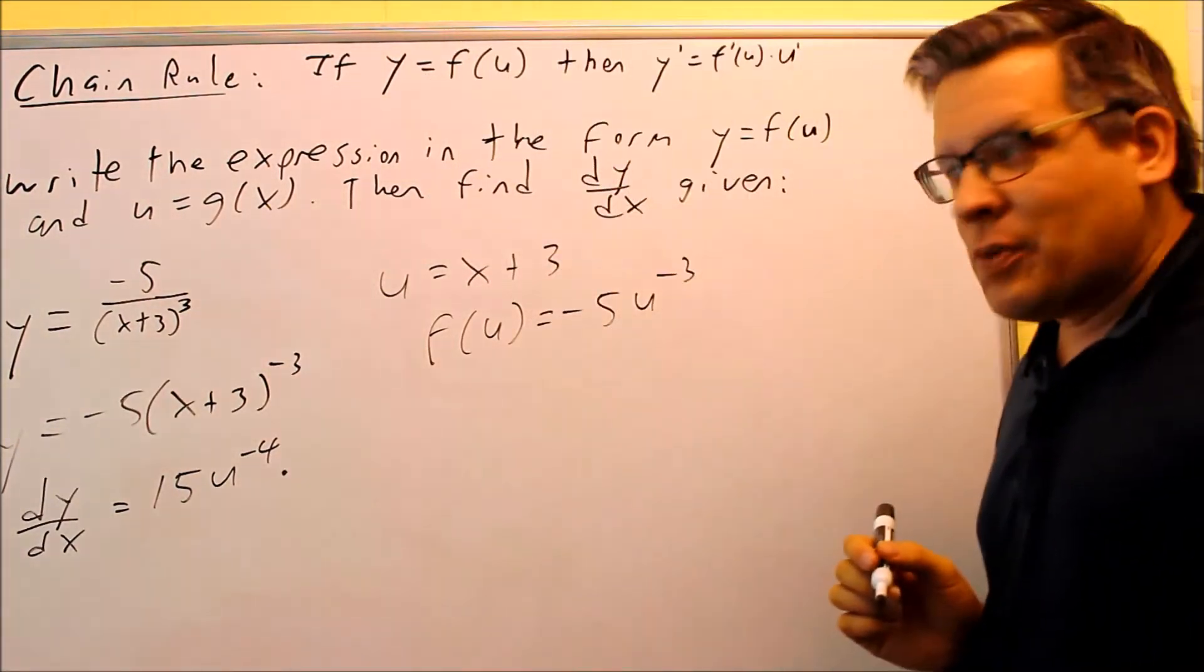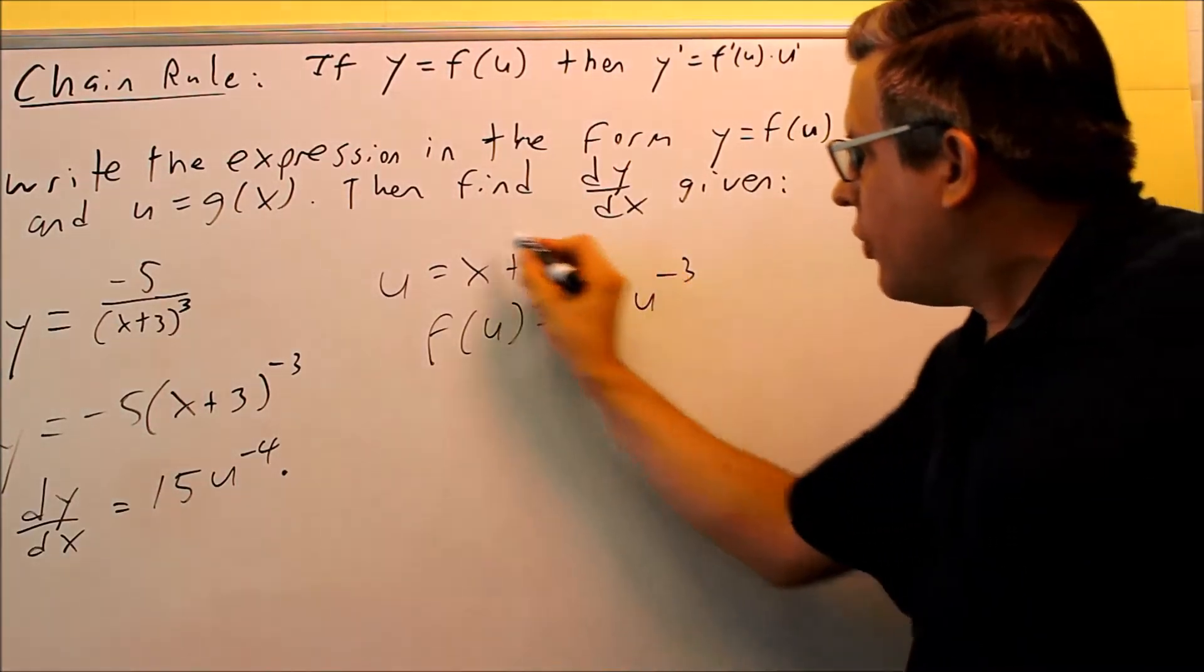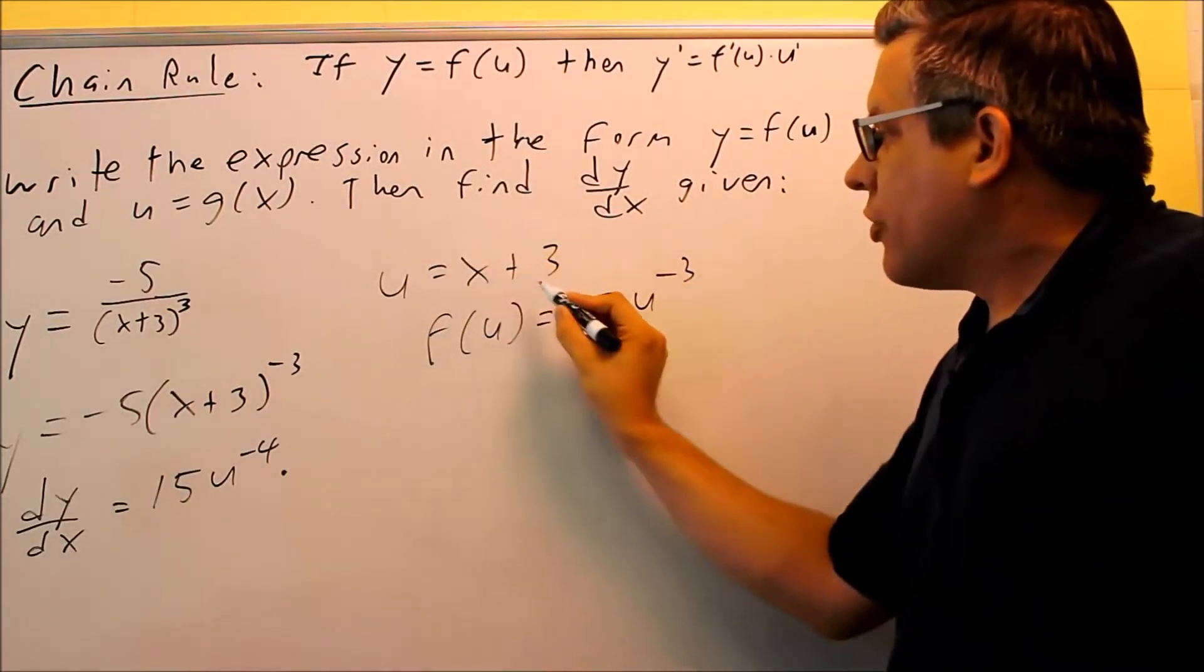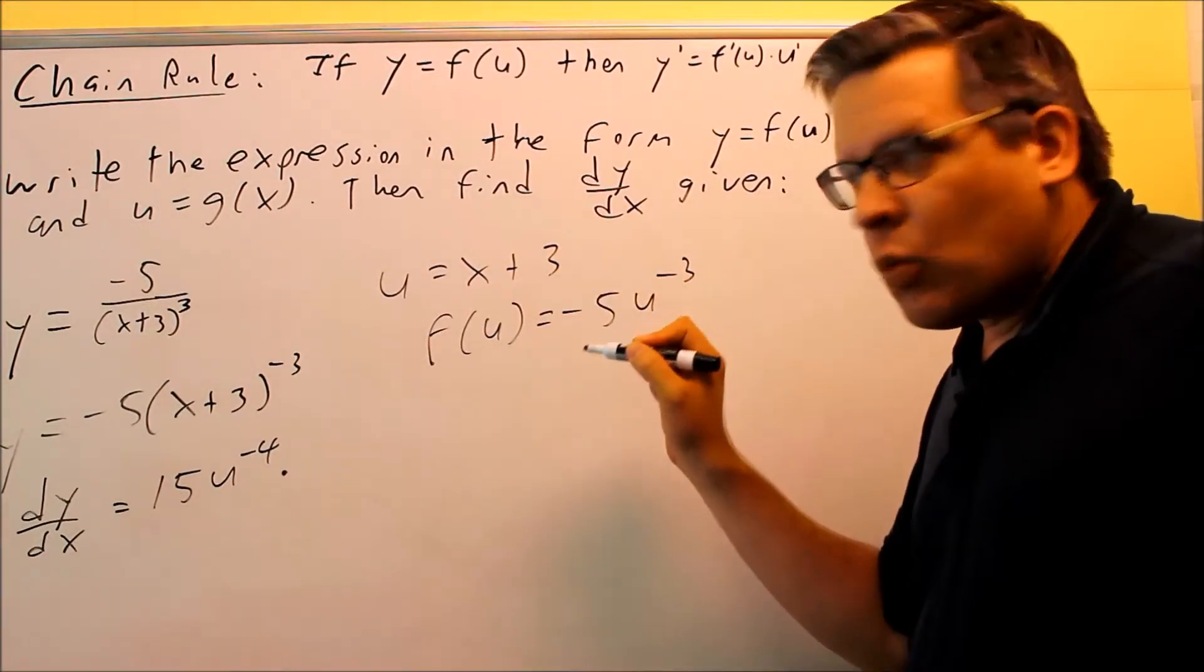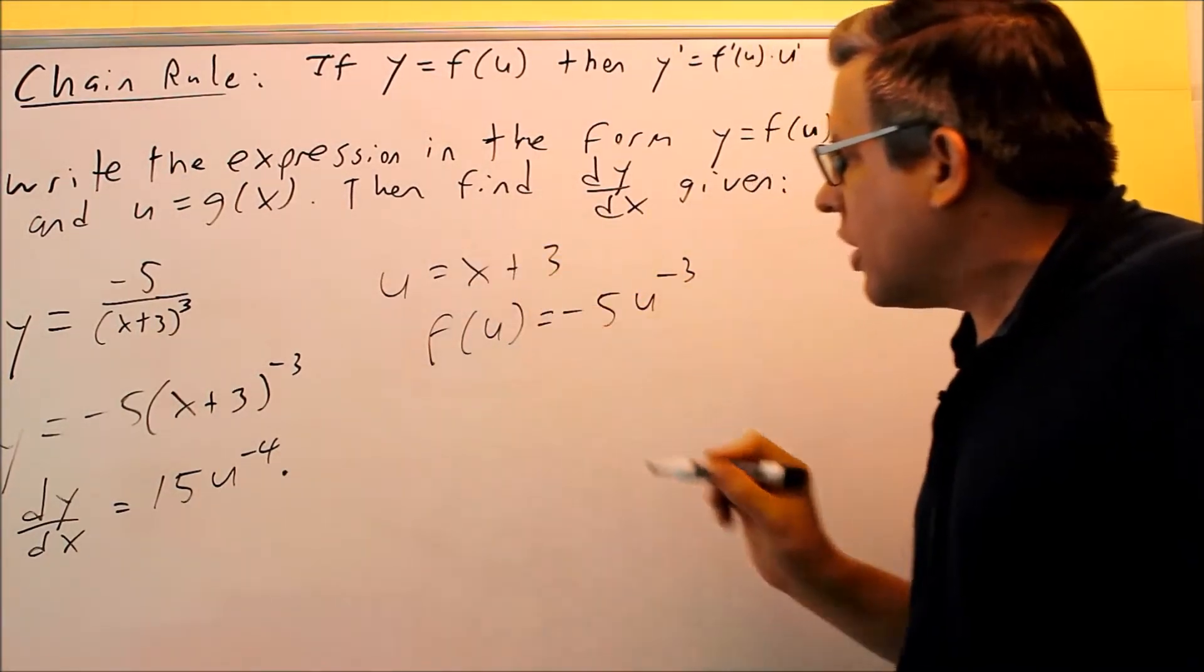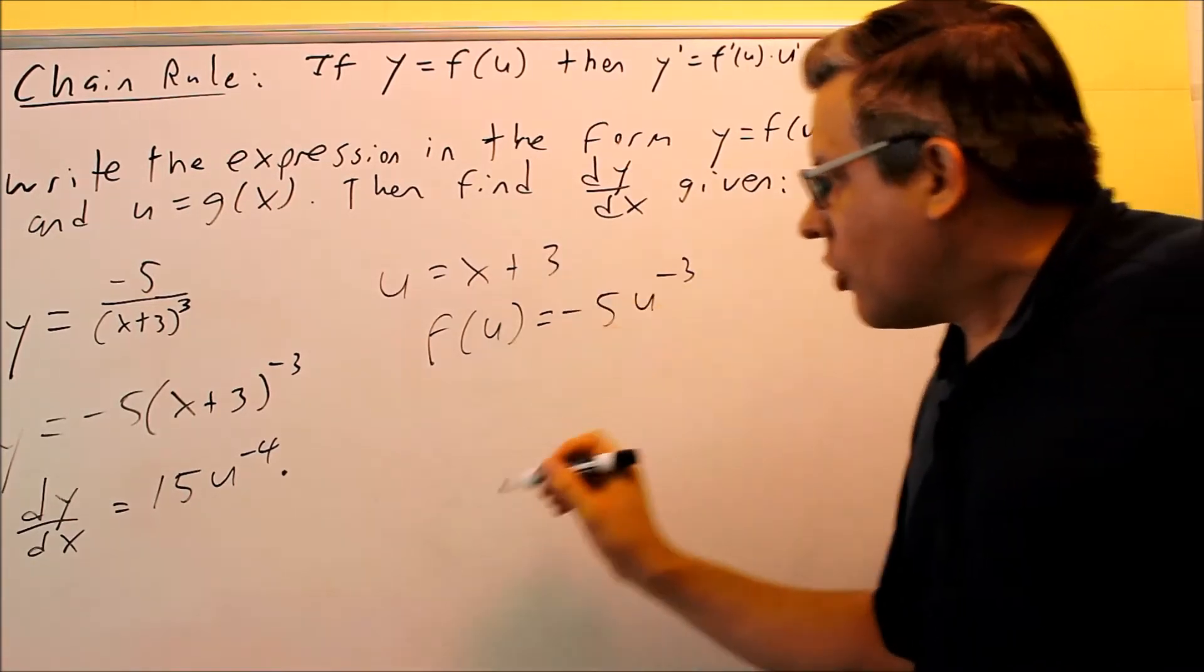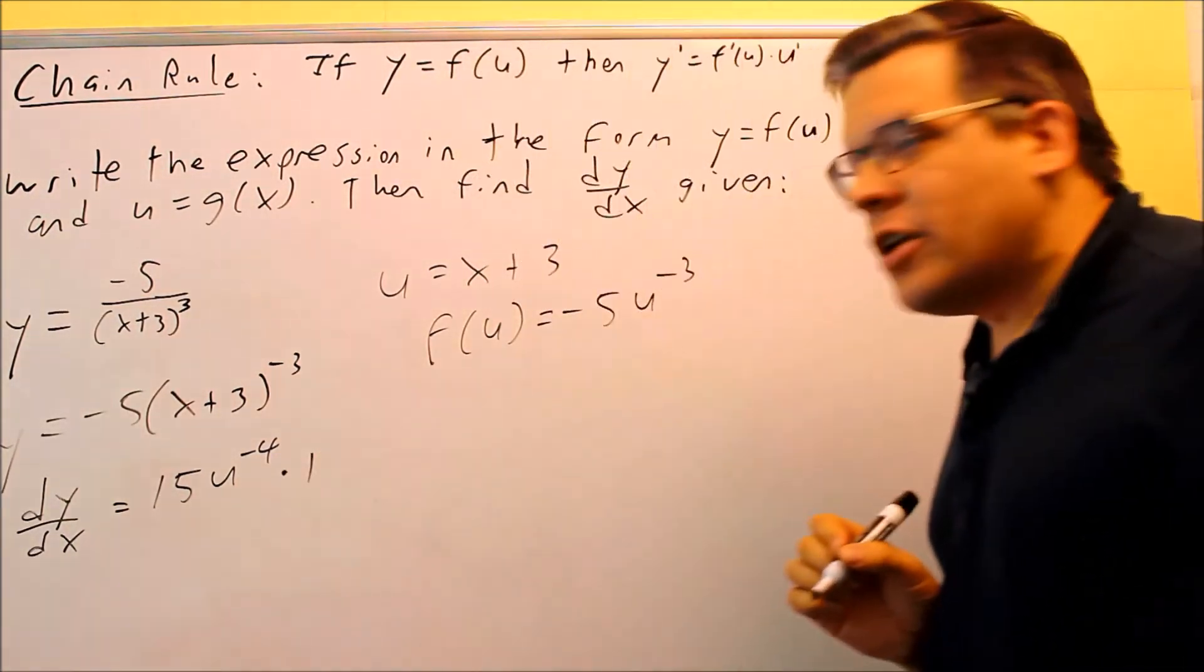Next, I want to multiply this by the derivative of u. The derivative for u, here it is right here, x plus 3, that derivative is going to be 1, because you're just going to get the constant that comes in front of the x. So I'll get a 1 that's right here.